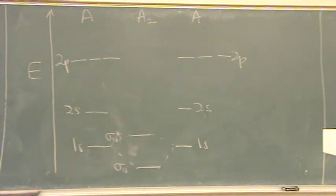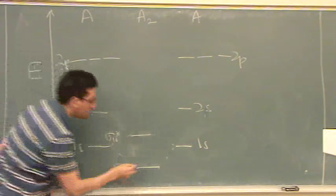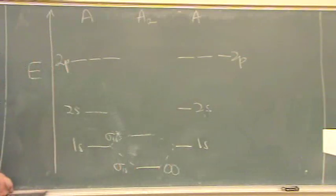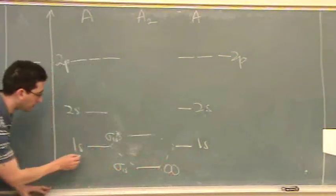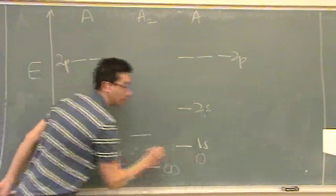Do you want me to draw in the shapes of the orbitals too? It's up to you. Okay, so if you draw in the shapes, the bonding is when you bring 2 1s orbitals together. Remember, the s orbitals are spherical.